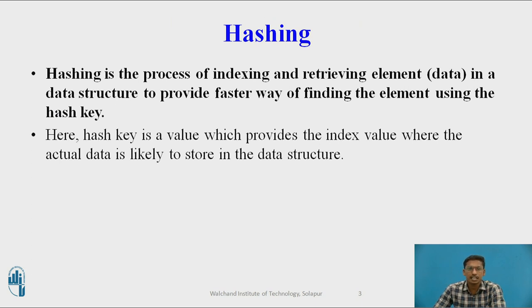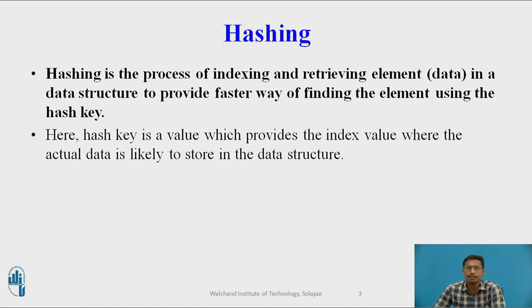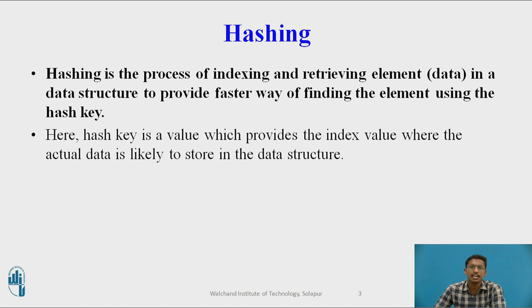We will just revise what is hashing again. Hashing is a process of indexing or storing and retrieving an element from the data structure in a faster way to find out an element using a hash key. Here, hash key is a value which provides an index value indicating where to store the input value inside a hash table. So hash key is different from the input value. Hash key is a value generated from a hash function, which is actually a location where to store the input value inside a data structure we call a hash table.